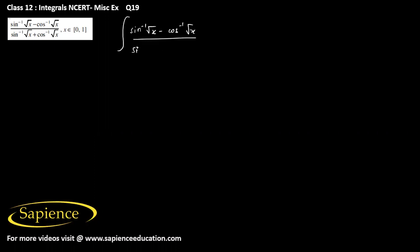We need to integrate the function which is sine inverse root x minus cos inverse root x, divided by sine inverse root x plus cos inverse root x, into dx, where x belongs to 0 to 1.